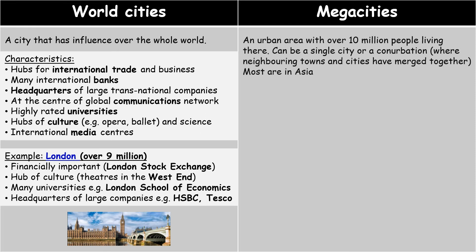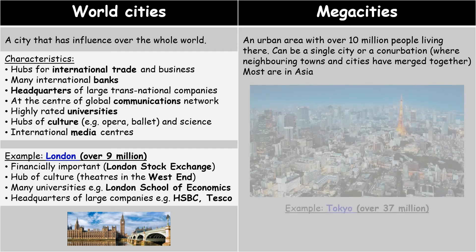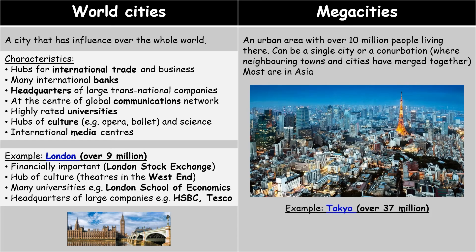Megacities are called 'mega' simply because they have more than 10 million people living there — nothing to do with their importance. A megacity is either a city or a conurbation where neighbouring towns and cities have merged together. Over half of them are within Asia, and an example is Tokyo, the world's largest city, with over 37 million people.